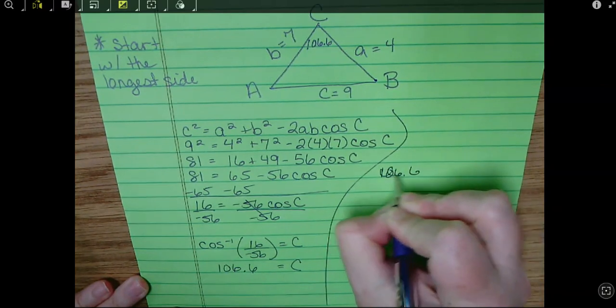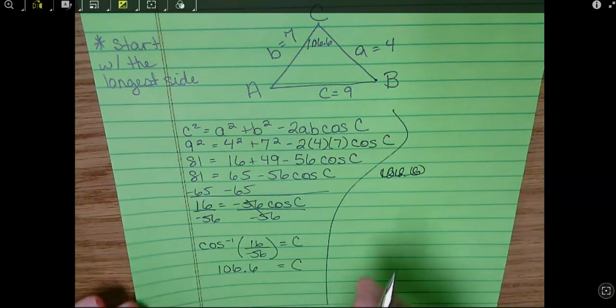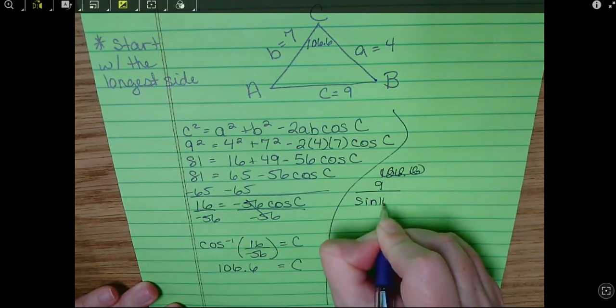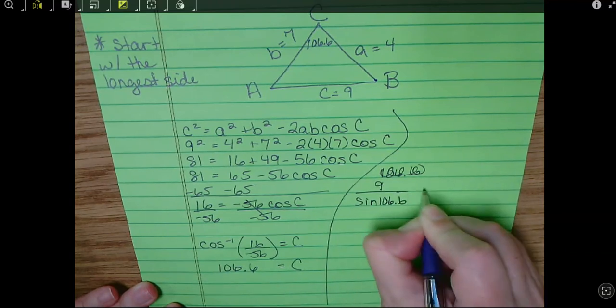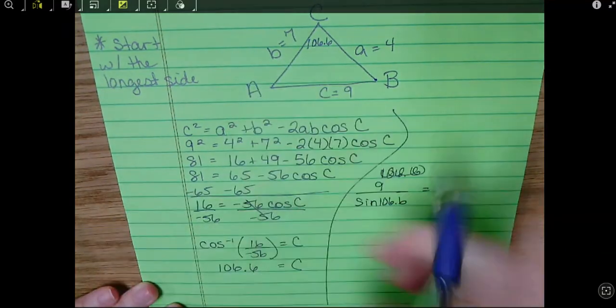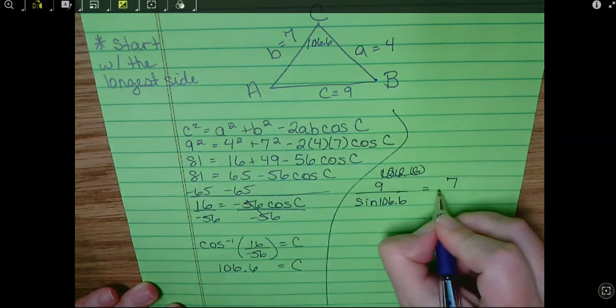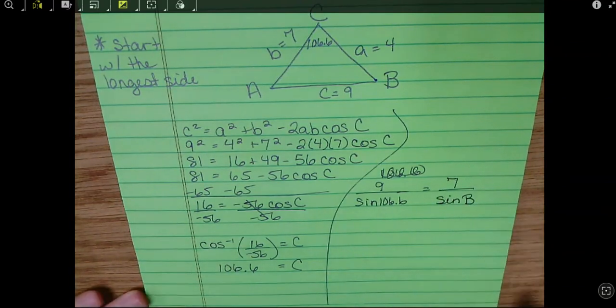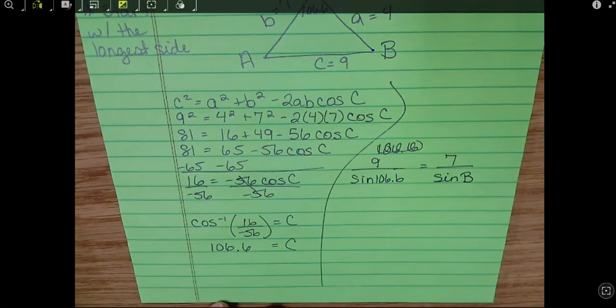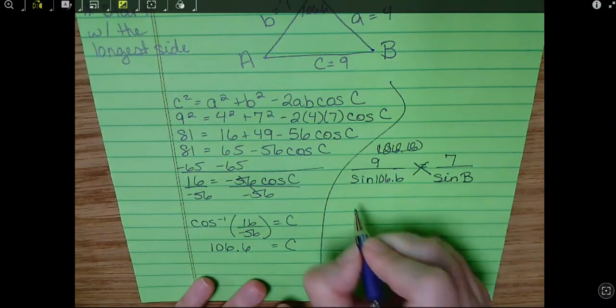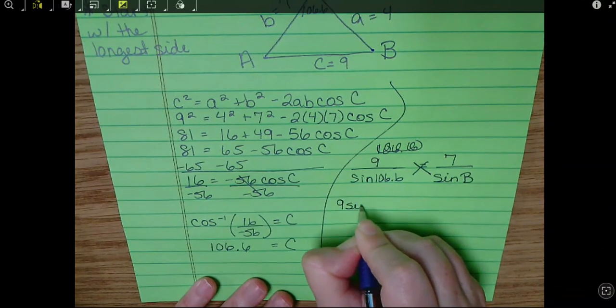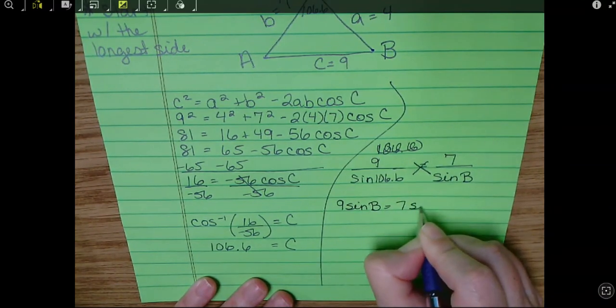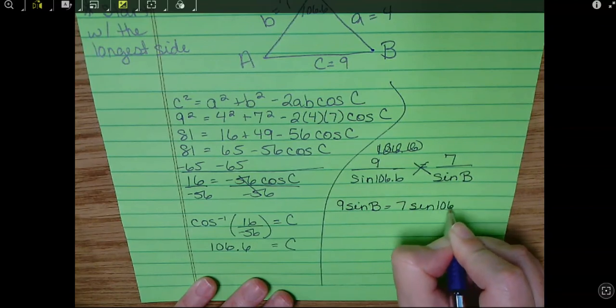Point, oh, no, no, no, no. Let's try this again. So we have 9 over sine 106.6 equals 7 over sine B. Okay. Here we go. Cross multiply. So we get 9 sine of B equals 7 sine of 106.6.